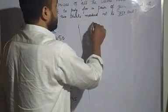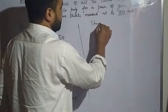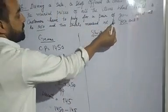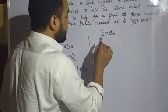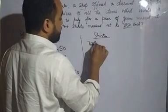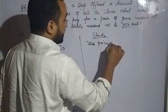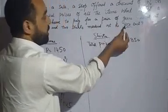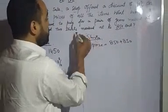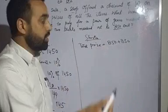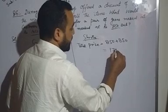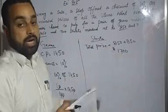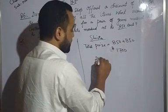Now for the shirts. Two shirts marked rupees 850 each, so total price is 850 plus 850, which equals 1700 rupees. The discount is 10%.